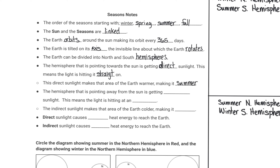The hemisphere that's pointing away from the sun gets indirect sunlight, which means the light is hitting it at an angle. Indirect sunlight carries a lot less energy over the same area, making it a lot colder, which means it represents winter. When neither hemisphere is pointing at the sun — like if they're pointing to the side of the sun — that's when we have spring and fall.